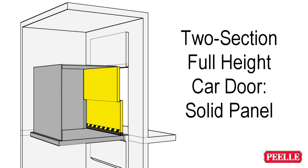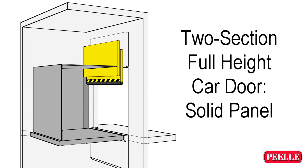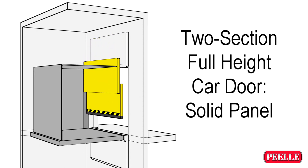Two-section full-height car doors, also known as reverse panel car doors, consist of two solid panels of equal height that completely cover the full opening height, with all chains and hangers inaccessible from within the car. These are used when there is limited overhead space at the top floor and the elevator is rated to carry passengers.